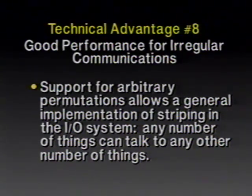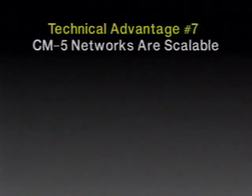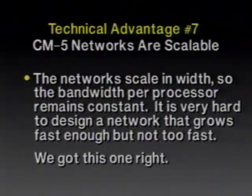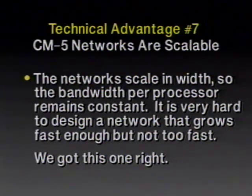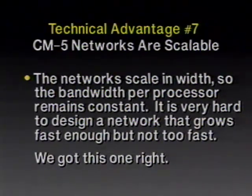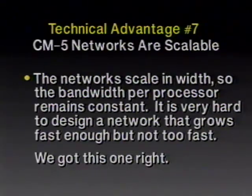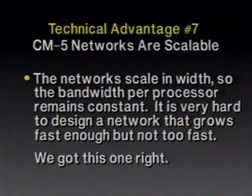The data network in the CM5 has the property that the worst case can never be worse than a factor of four off the best case. The design of the data network rewards locality — being local is good, but it's not necessary to be regular to get good performance. This is important because we're encountering more and more application areas that require local but irregular communications. Since the data network supports arbitrary permutations, this allows general striping in the file system, supporting transfer of data between groups of processors with different numbers, or between different I/O devices — you can copy data from 27 disks onto 14 tape drives and it all works. Technical advantage number 7: the CM5 networks are scalable.